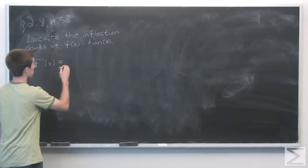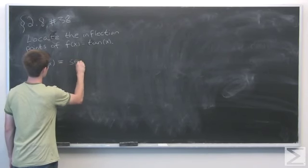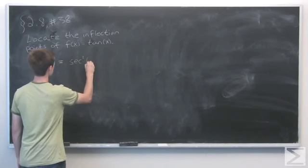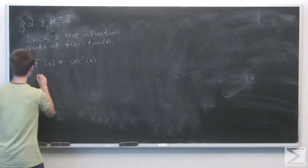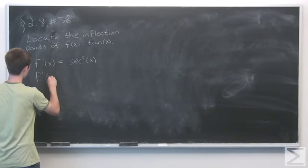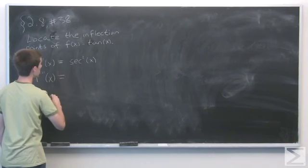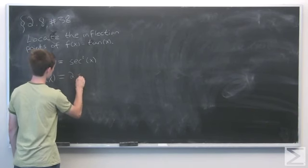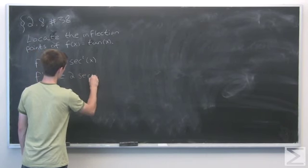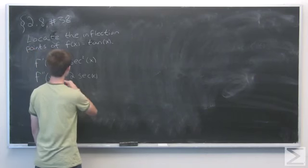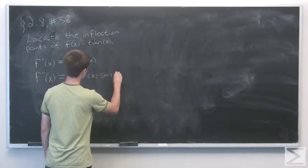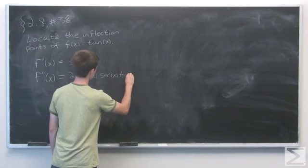We see that the derivative of tangent, of course, is secant squared of x, which then means that the second derivative is 2 secant x. And applying the chain rule, we get secant x times tangent of x.